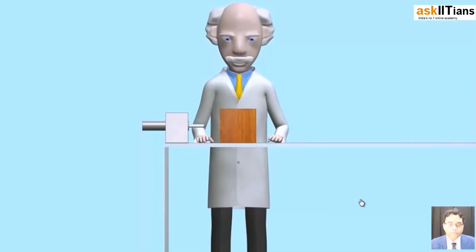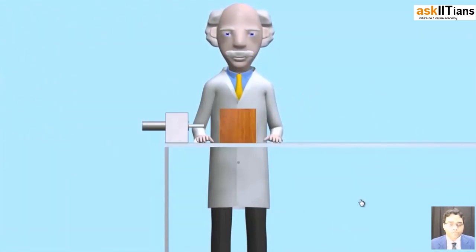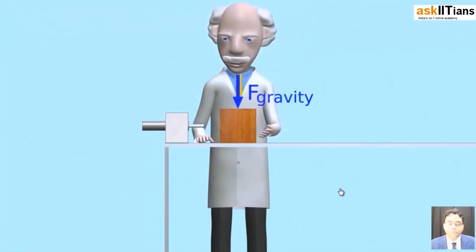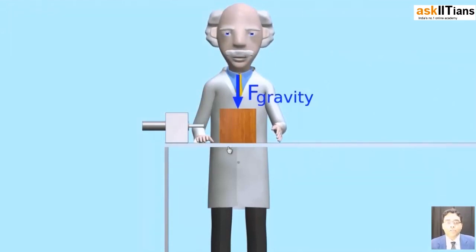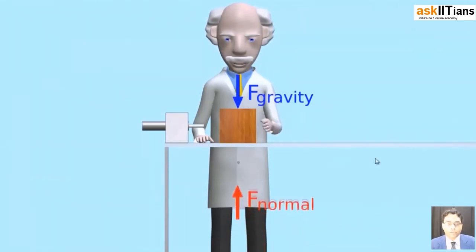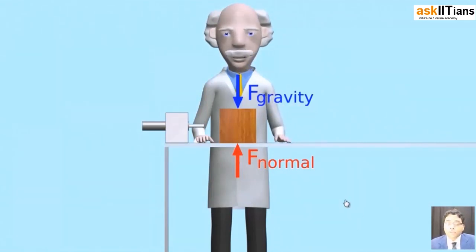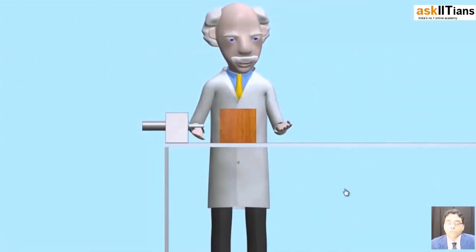We see that the object does not move on its own. Even though the object does have mass, it has forces acting on it, but the object is not moving. There is a gravitational force — which is nothing but its weight — and the surface of contact, the table, is also exerting a force in the upward direction, which is the normal force. Both these forces are acting on this mass, but the object is not moving. That means these two forces are balanced forces.